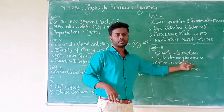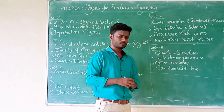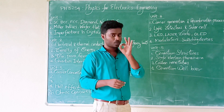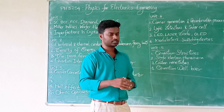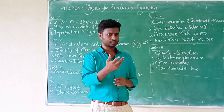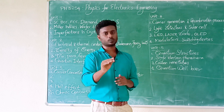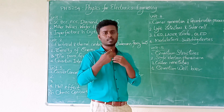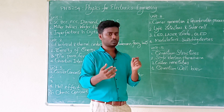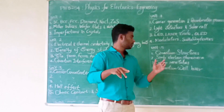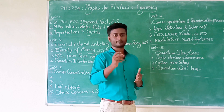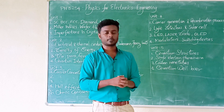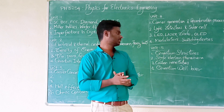Single electron transistor: the key concept is single electron tunneling. For example, like a phone — one press equals one electron action. If you press once, one electron reacts; press again, another electron. This phenomenon is called Coulomb blockade. The main question: how does a single electron transistor work, and how do you draw its diagram?